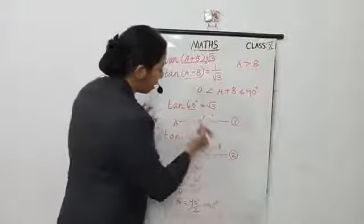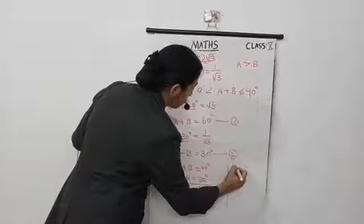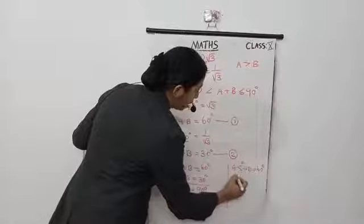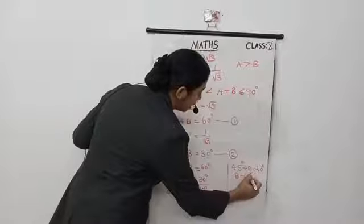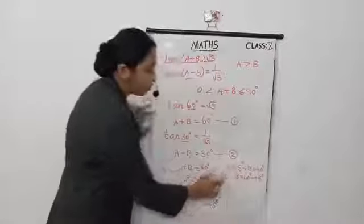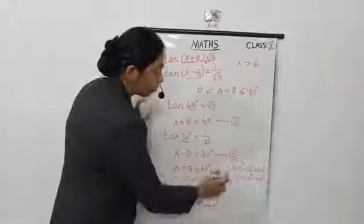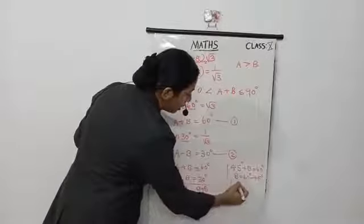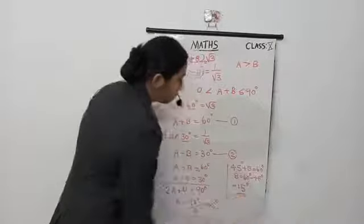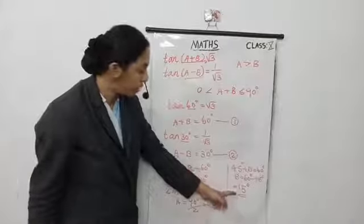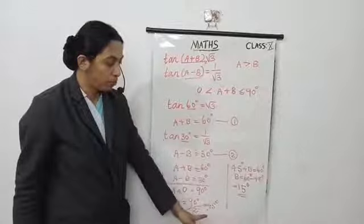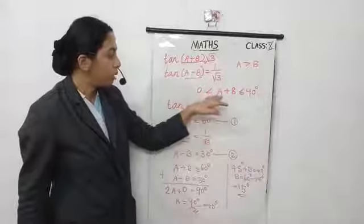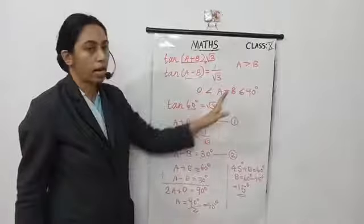Now substitute A = 45° into equation 1: 45° + B = 60°. Transpose 45° to the right hand side: B = 60° − 45° = 15°. So B = 15°. We get A = 45° and B = 15°. A+B = 60°, which is between 0° and 90°, so the condition is satisfied.